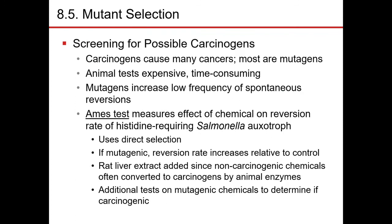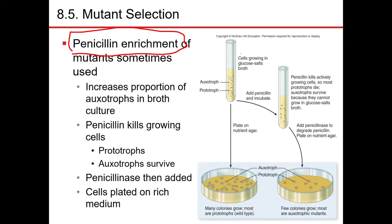In a tube of glucose salt broth — made up purely of glucose and other dissolved mineral salts — this combination is sufficient for prototrophs but not for auxotrophs. The wild type, the non-mutants, can grow on this; they can use the glucose to make whatever they need. But the auxotrophs, because they are mutants, find this insufficient and need additional growth factors in the media.